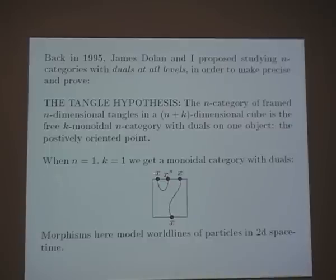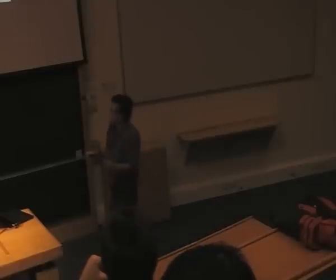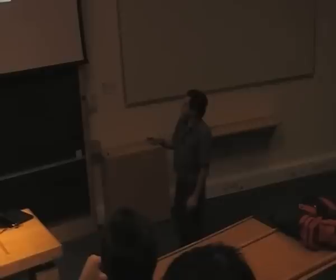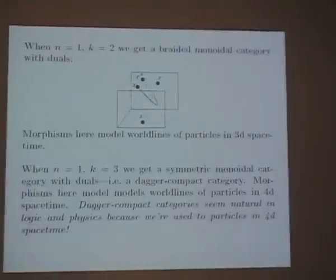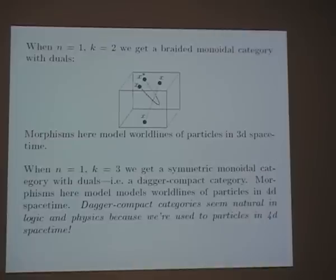Pictures of tangles in a square are the morphisms in a monoidal category with duals of both kinds. It's a dagger category — you can reflect pictures vertically, giving the dagger operation on morphisms — and every object has a dual, giving caps and cups. In terms of physics, you can think of these as pictures of particles moving in a two-dimensional spacetime. Increasing k by one gives particles in a three-dimensional spacetime — braided monoidal categories with duals on one object. Increasing again gives symmetric monoidal categories with duals: dagger compact categories.